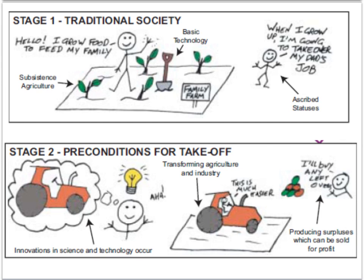For countries to move to the second stage, the key thing that needs to occur are technological innovations — represented here by a tractor. These technological innovations should allow producers to become more efficient, to generate surpluses which can then be sold for profit. So you begin to get a bit of trade in this second stage of development.